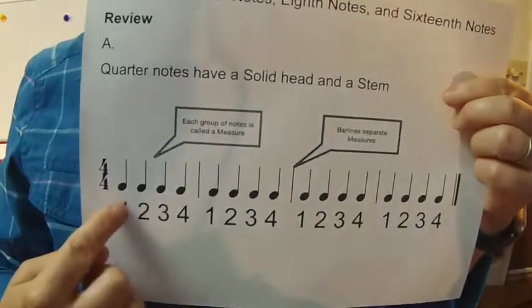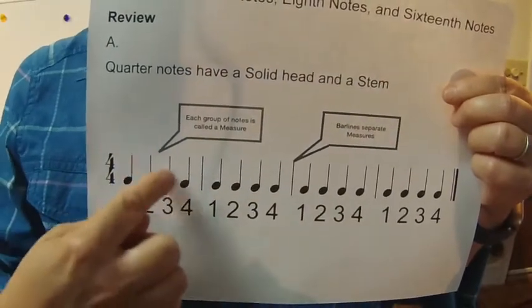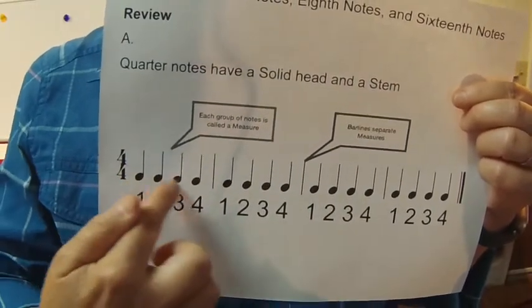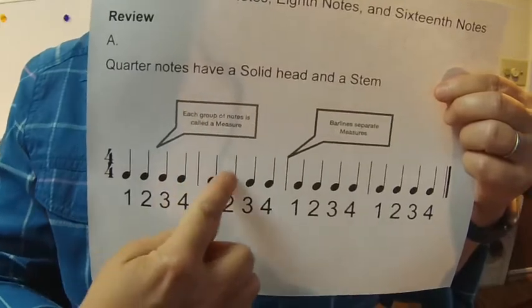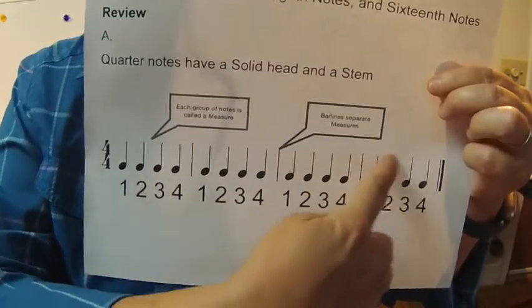We're also going to review that this group of notes is called a measure. As is this group is a measure, that group is a measure, and that one.